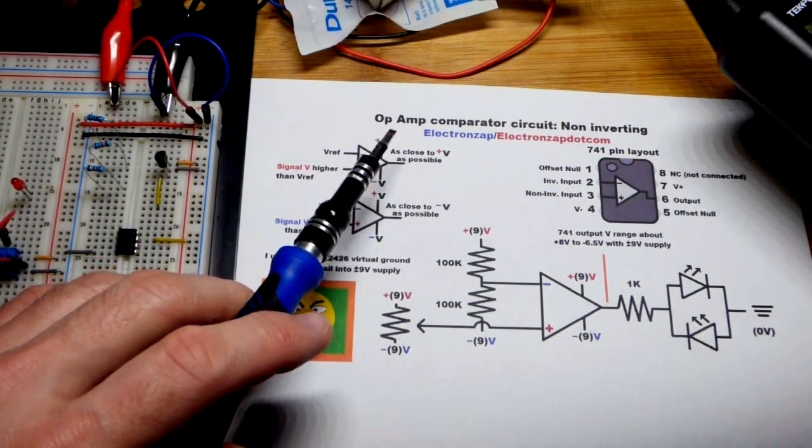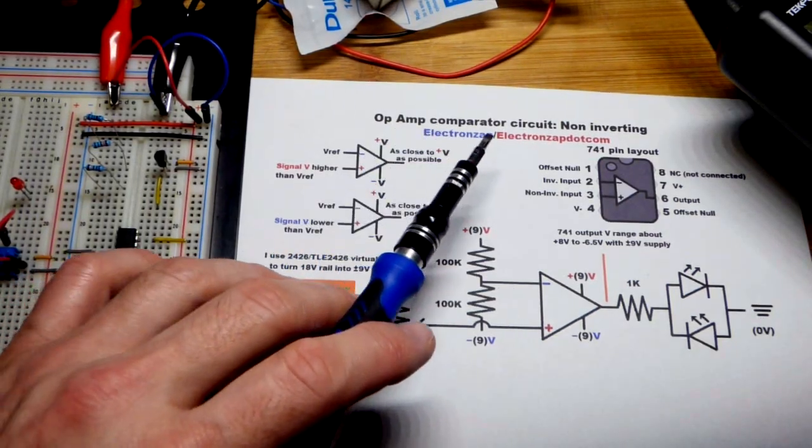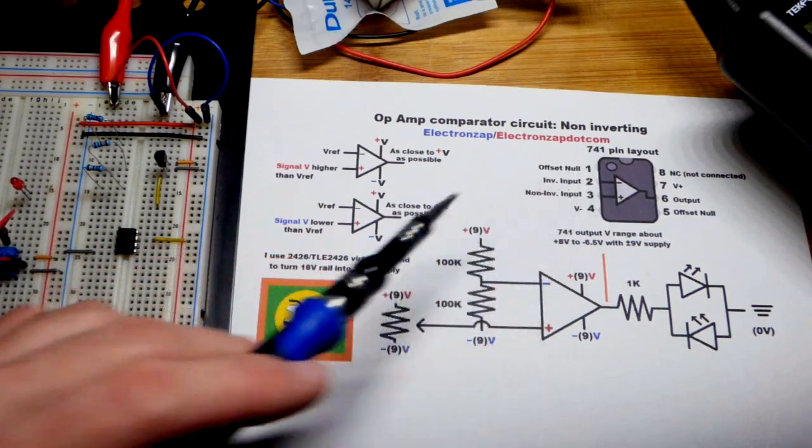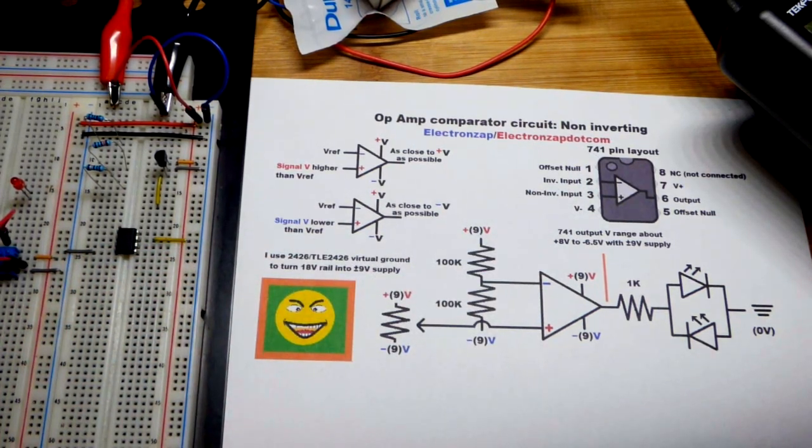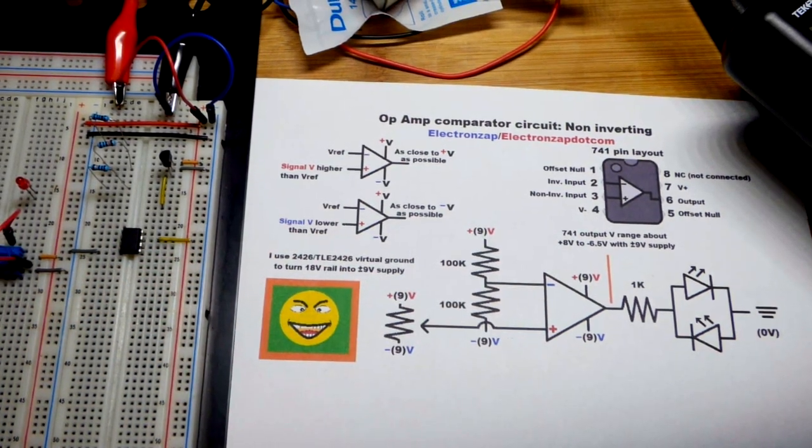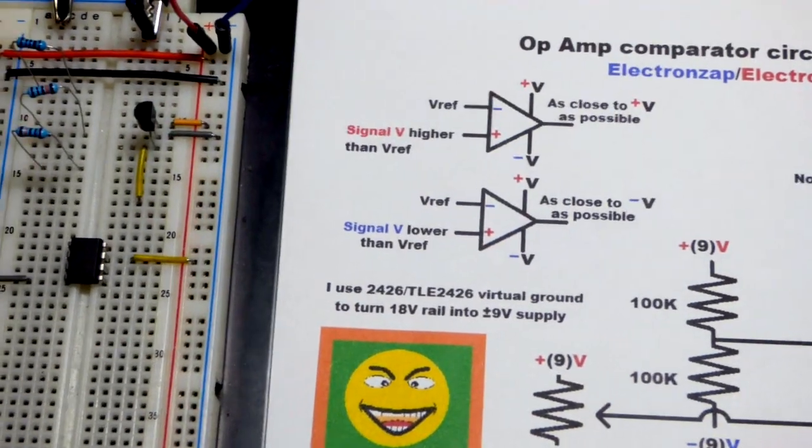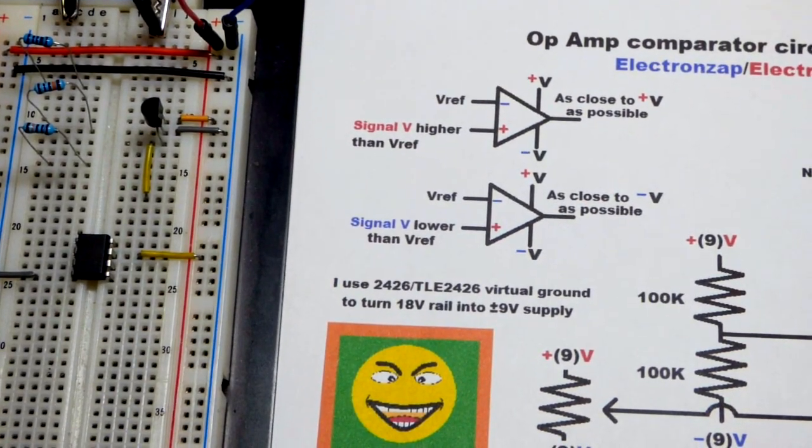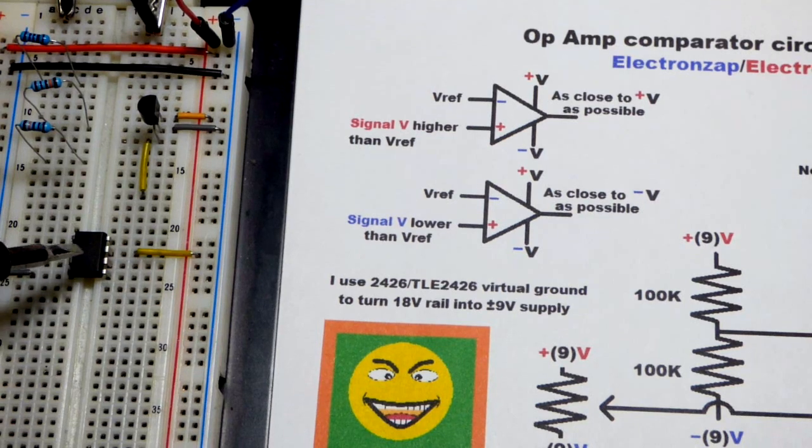In this video, we're going to look at using the op amp as a comparator. This is going to be a non-inverting comparator. I think this is the most important circuit to learn first because it shows the basic properties of the op amp.